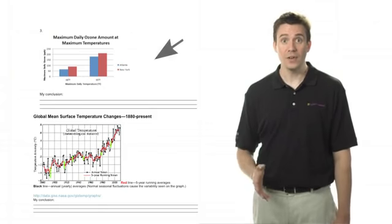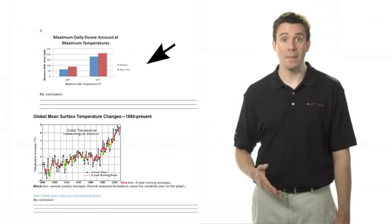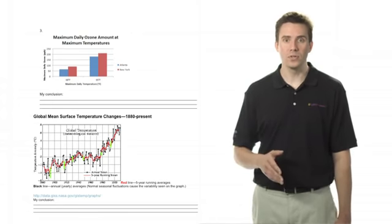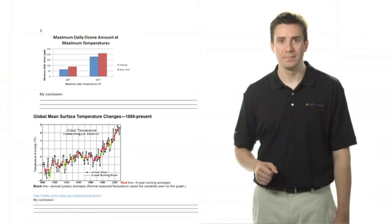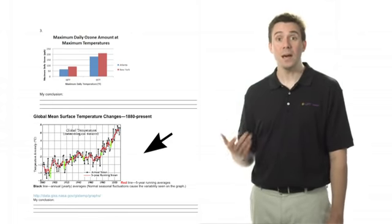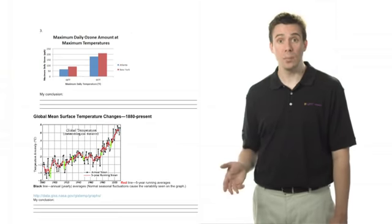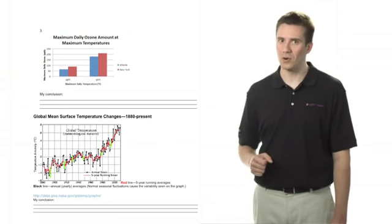In the third graph, you saw maximum daily ozone amounts at maximum temperatures. You should have concluded that in New York, there is more ozone than in Atlanta. And in the final graph, you see temperature anomalies over years. You should have concluded that as the years go by, the temperature anomalies become greater. So now that you've looked at some inferences and conclusions and come up with ones yourself, let's take a look at some more data.